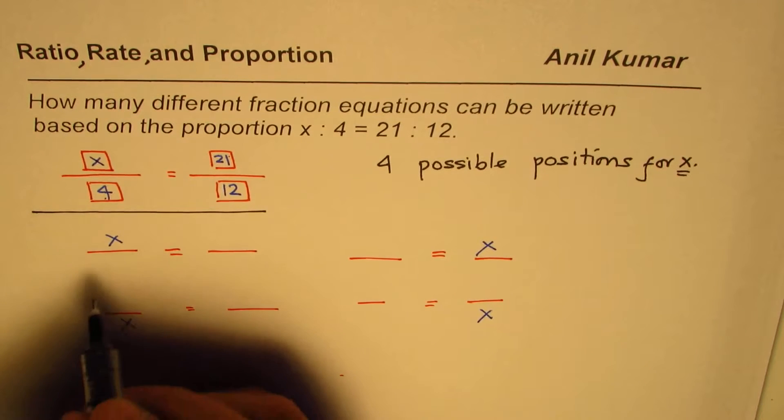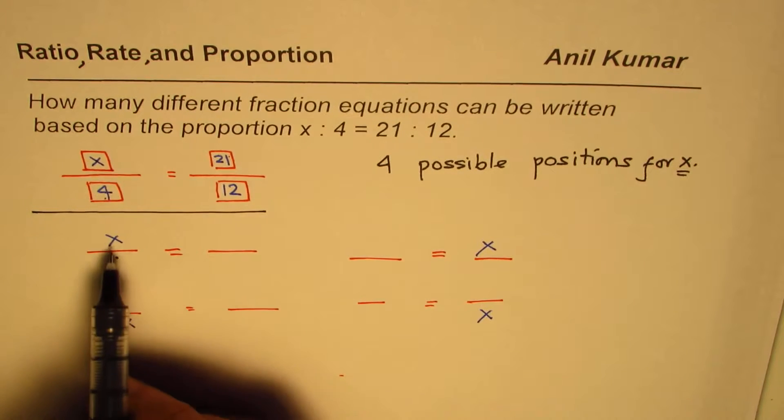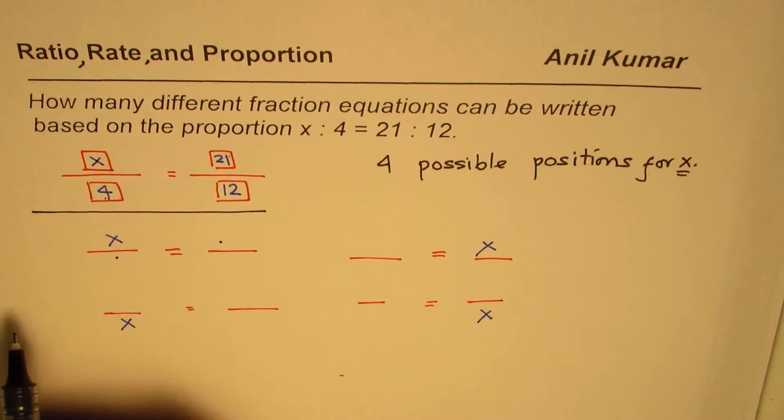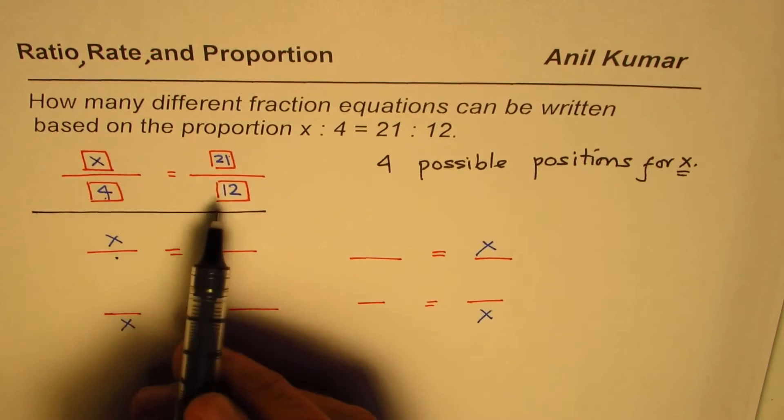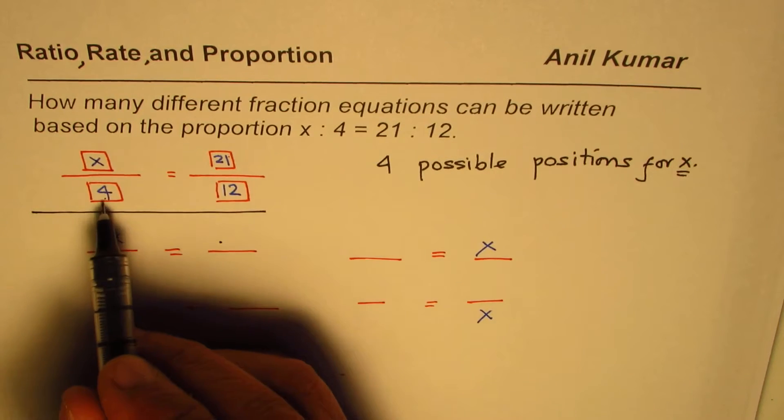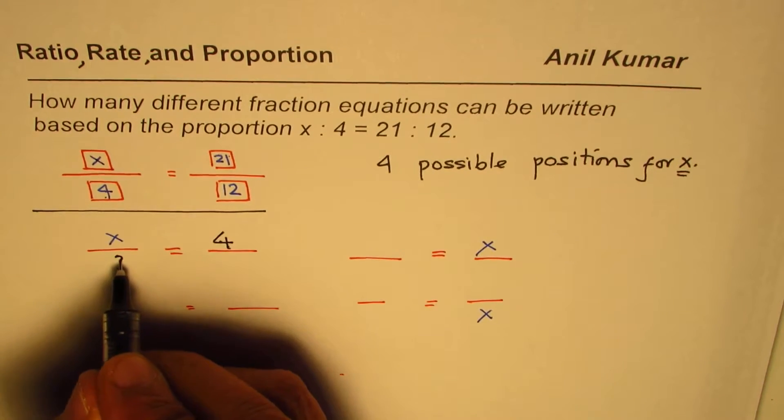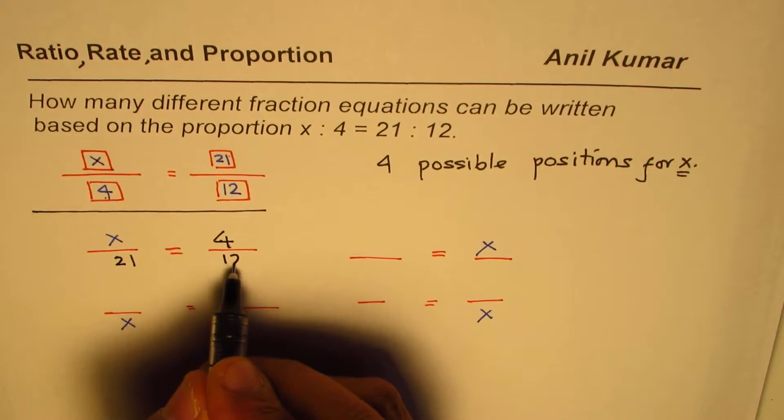So this number 4 can be placed here, when x is in this position, or as I have placed here, or I could place this number 4 right across also. Do you see that? I could write this fraction as, if I interchange these two positions, I could write 4 here, and I could write 21 here, and 12 there. Do you see that?